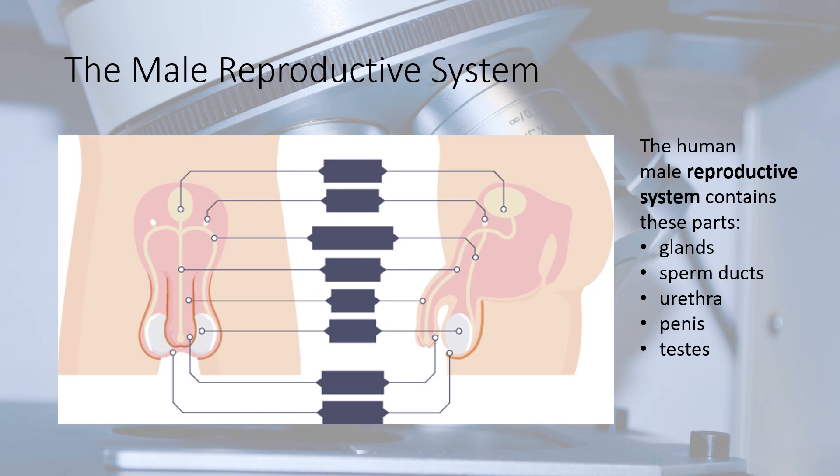The male reproductive system is made up of glands, sperm ducts, the urethra, the penis, and the testes. Your bladder is the part of your body where urine is stored until it leaves your body, but the bladder empties into the urethra and is not considered to be part of the reproductive system.